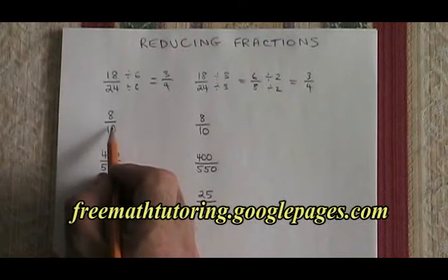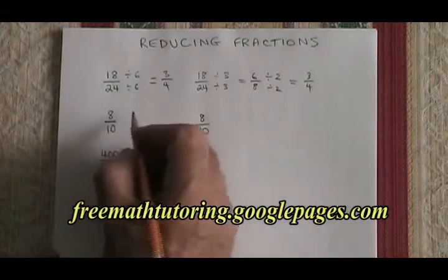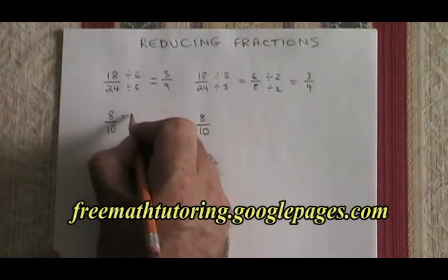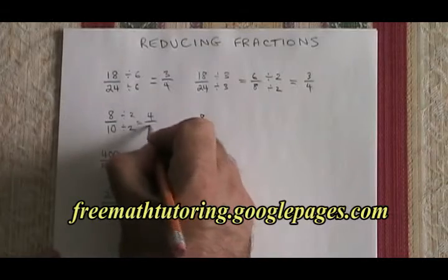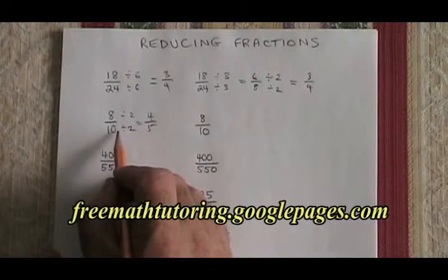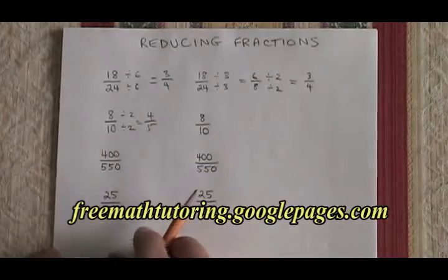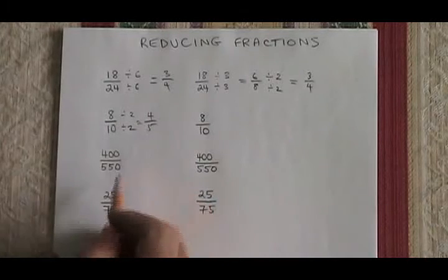Let's try it with this one. 8 and 10 have a common factor of 2. If we divide both top and bottom by 2, we get 4 fifths. Since 2 is the only common factor of 8 and 10, there is no second method that will work. No matter what will happen, we will get 4 fifths.